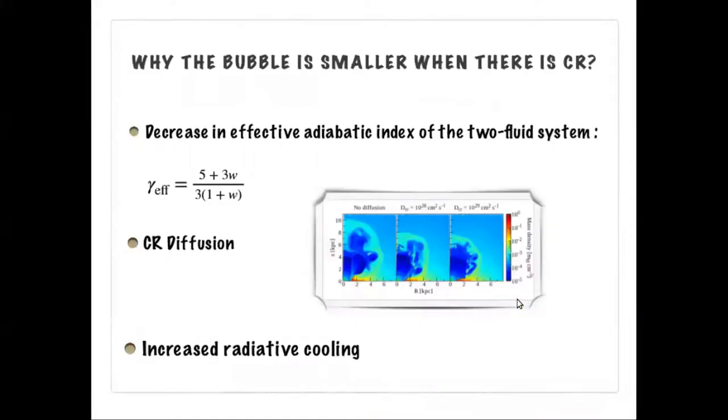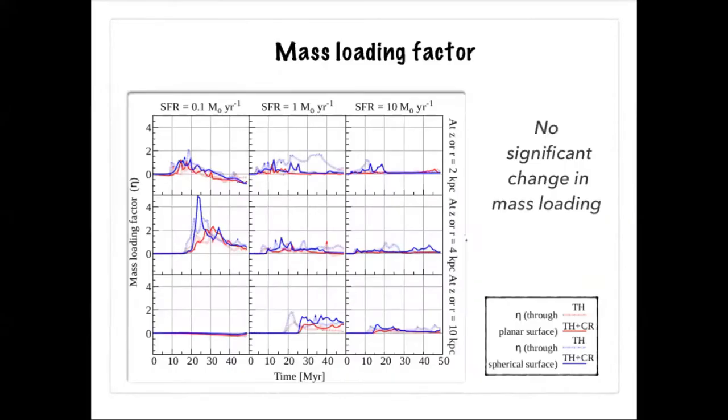Now, a slightly smaller bubble in presence of cosmic rays may be due to a number of reasons. The effective adiabatic index decreases from 5/3 when the outflow is partly driven by cosmic ray pressure. Moreover, the cosmic rays diffusing out of the bubble carry a significant amount of energy. Even the excess cooling of outflowing gas can decrease the size of the bubble in presence of cosmic rays. We also plotted mass loading factor for all our simulations. The plot here does not show any significant difference in mass loading depending on whether the outflow is driven by thermal pressure or cosmic ray pressure.